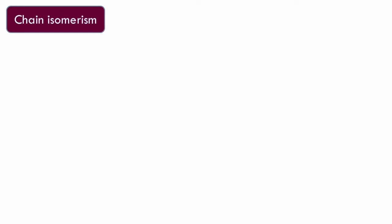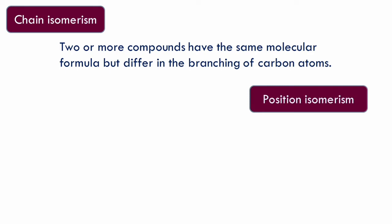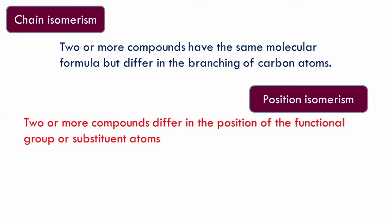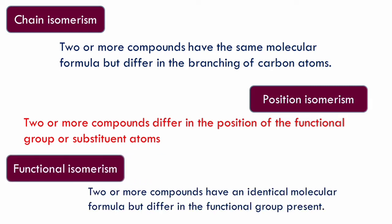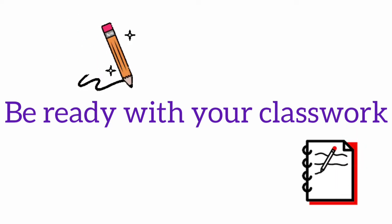Structural isomerism is further classified into chain, positional, functional, and metamerism types. In chain isomerism, two or more compounds have the same molecular formula but differ in the arrangement of carbon atoms in a chain. In position isomerism, structures have the same molecular formula but different positions of the functional group or substituent atoms. In functional isomerism, molecules differ in the functional group present. In all types of isomerism they share the same molecular formula but differ in structure. Now let's practice drawing the isomers of butane and pentane.